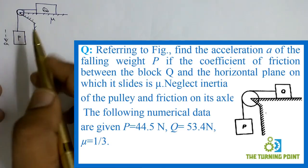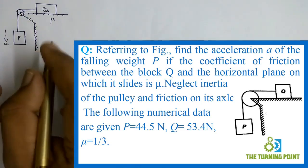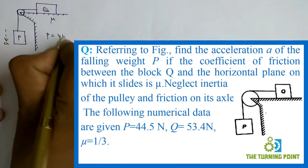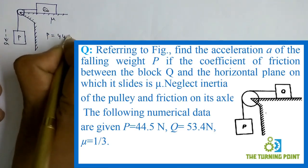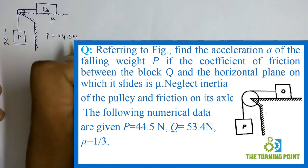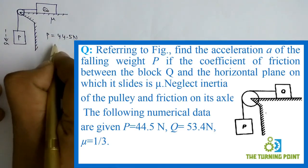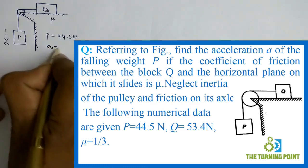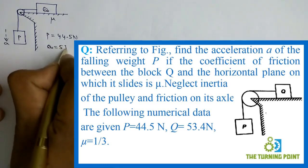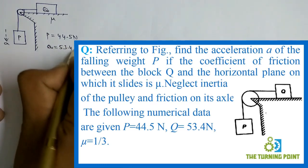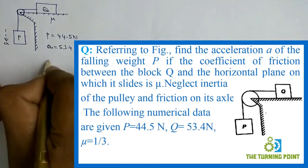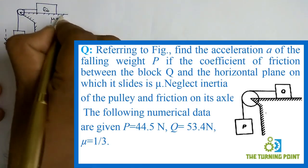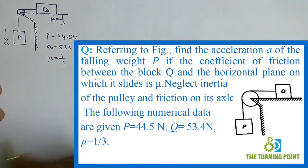The following numerical data are given: P is equal to 44.5 Newtons, Q is equal to 53.4 Newtons, and mu is equal to 1/3. These are the given data.